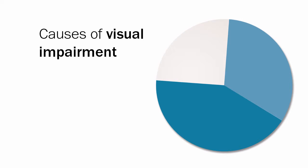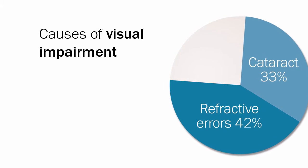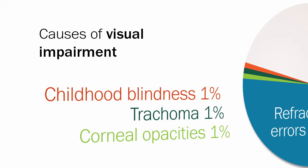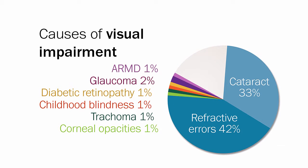Regarding causes of visual impairment, global data has identified that refractive errors and cataract cause over 75% of all visual impairment in the world. These two diseases occur across all populations and are closely linked with ageing. Other causes such as trachoma, corneal opacities and childhood blindness occur among specific at-risk populations. Diabetic retinopathy, glaucoma and age-related macular degeneration are diseases that are on the increase globally. It is difficult to identify a single main cause for about 18% of visual impairment.